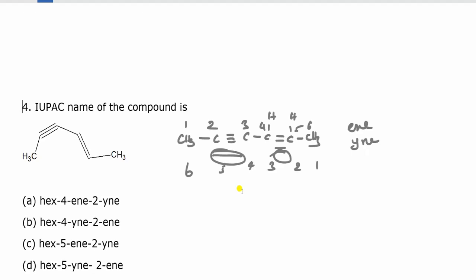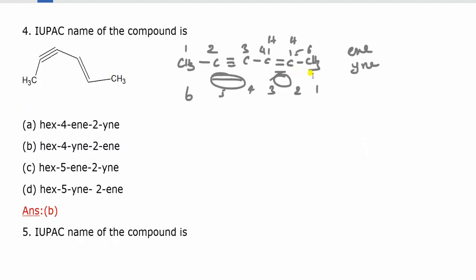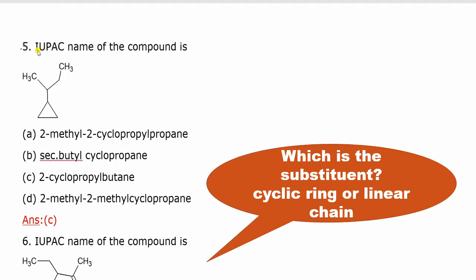The substitution is at carbon 4. There are 6 carbons, so hex — 4-ene (4 level ene), 2-yne (2 level yne). The answer involves alkyne and a double bond. This is the name of the compound — it is an open chain system.